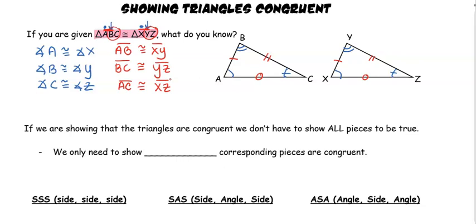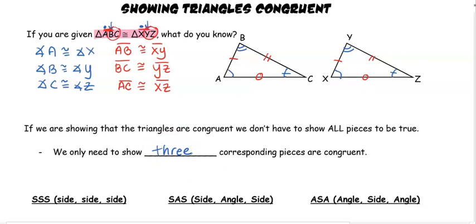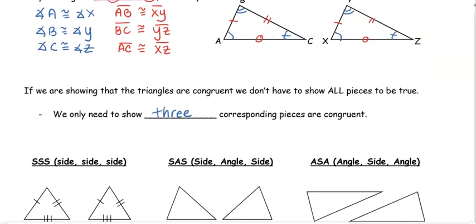When triangles are congruent, there are six pieces of corresponding congruent parts — corresponding means they're in the same location on the other triangle. The good news is, when proving triangles are congruent, I don't have to prove all six pieces are congruent. I only have to show a certain three sets of corresponding pieces, and I get the other three for free.